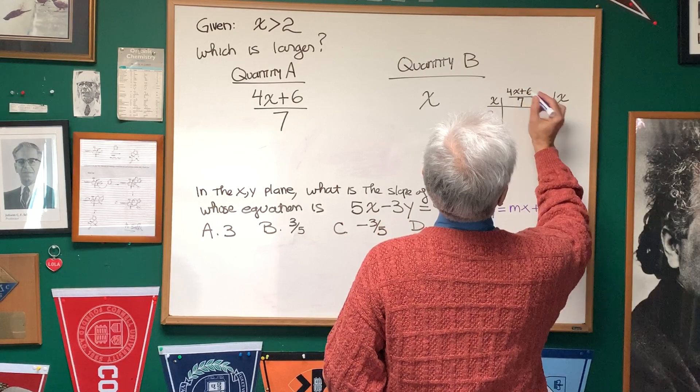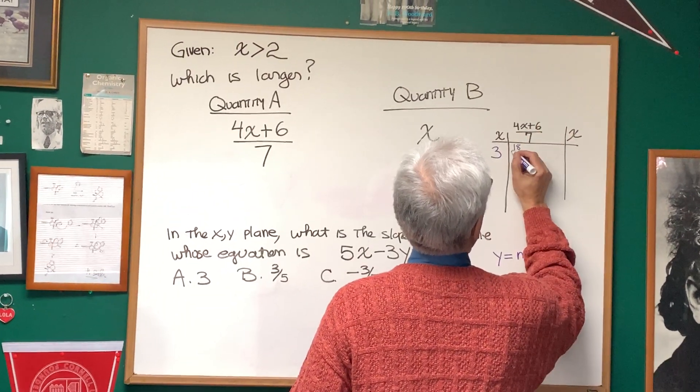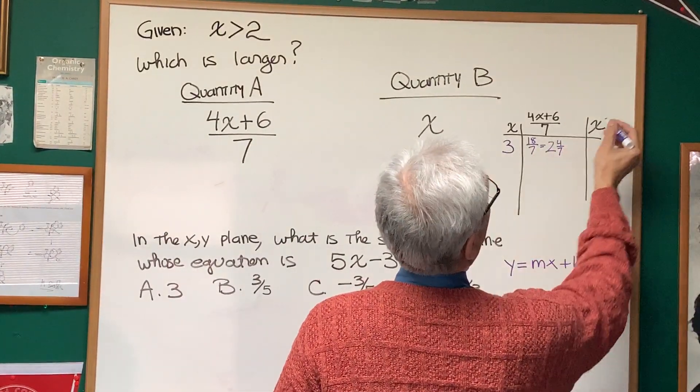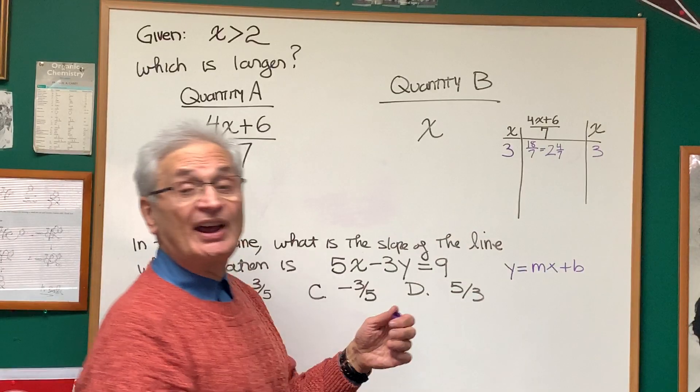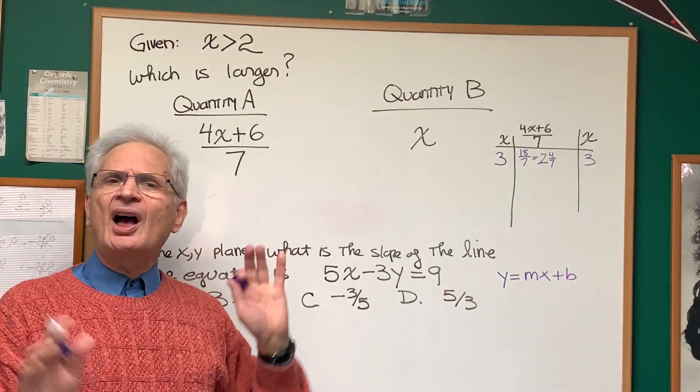So let's see, 4 times 3 is 12, plus 6 is 18, and that's over 7, and that's equal to 2 and 4 sevenths, and the value of x is 3. So in the case of x equals 3, quantity B is larger.